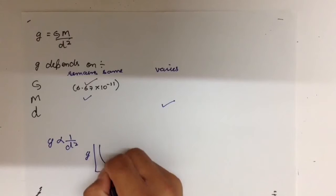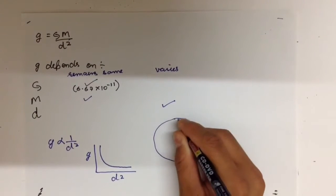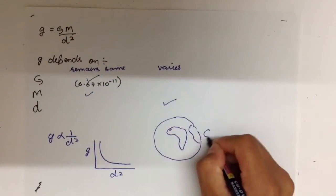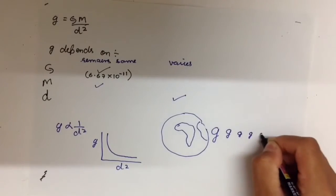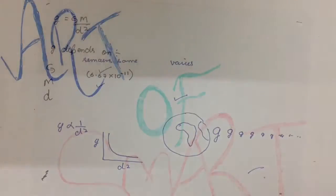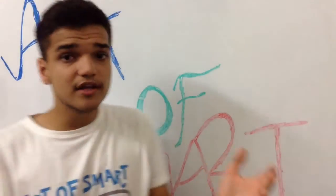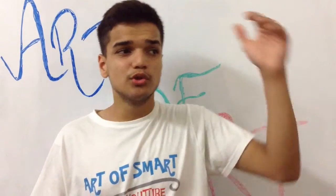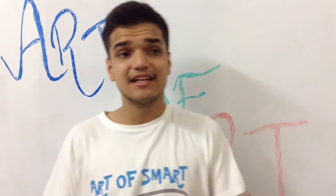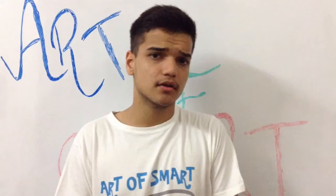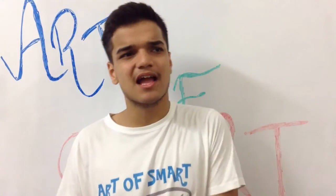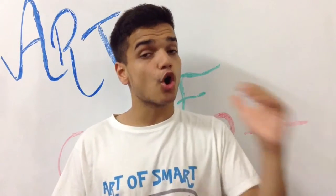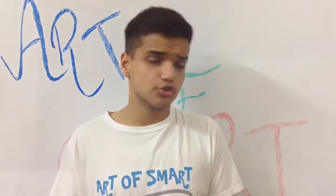So, closer we are to Earth, we get more g, and as we move away, g decreases until it becomes zero, showing the end of Earth's sphere of influence. Acceleration due to gravity decreases with an increase in distance from the center of the Earth. This implies that with an increase in altitude, your weight should decrease.